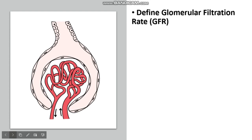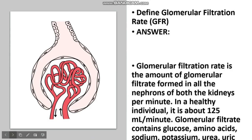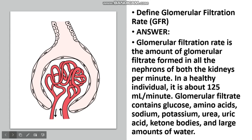What is the glomerular filtration rate? The answer is glomerular filtration rate is the amount of glomerular filtrate formed in all the nephrons of both kidneys per minute. In a healthy individual, it is about 125 ml per minute. Glomerular filtrate contains glucose, amino acids, sodium, potassium, urea, uric acid, ketone bodies, and large amounts of water.